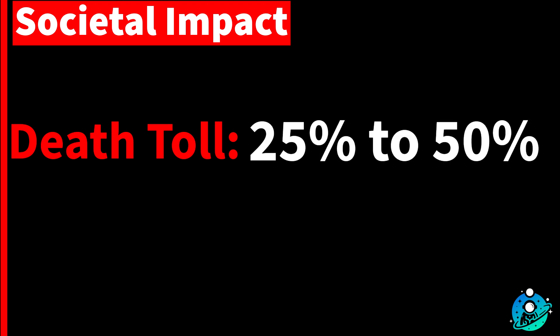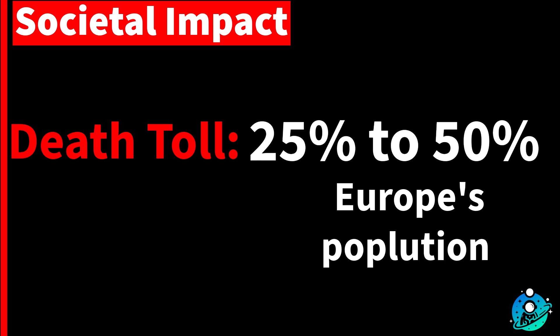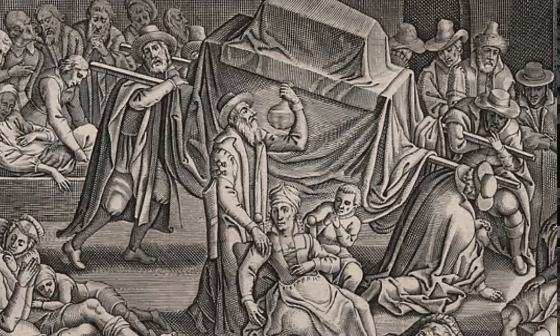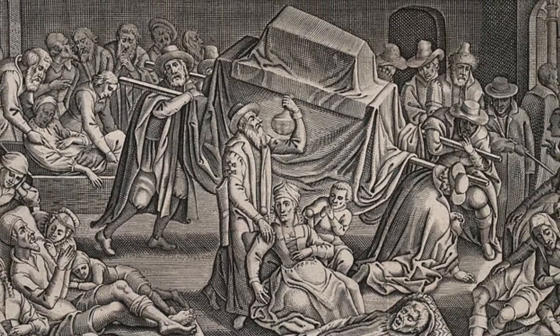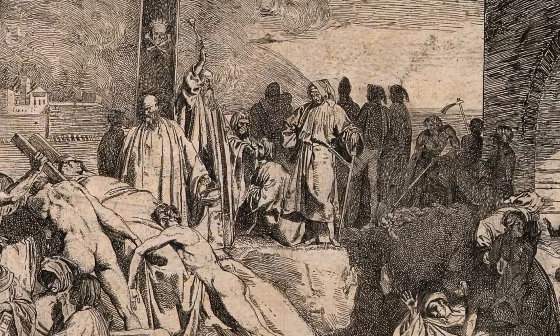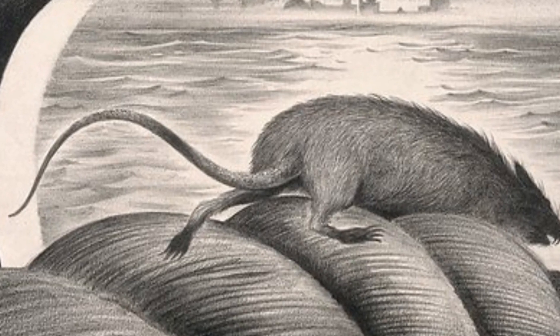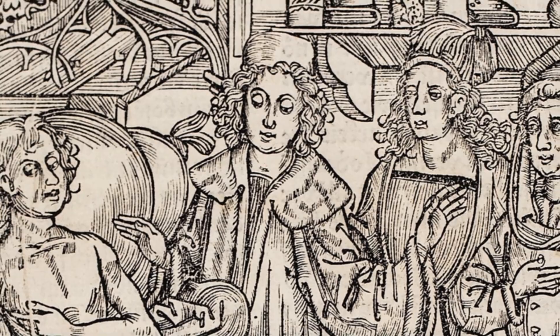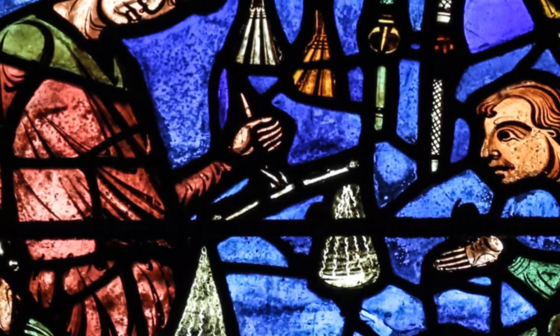The death toll was staggering. It is estimated that the Black Death killed between 25% and 50% of Europe's population, with some areas experiencing even higher mortality rates. The societal impact was profound. Entire communities were wiped out, and the sheer scale of death caused widespread panic and chaos. Traditional social structures crumbled, labour shortages ensued, and the economic system was severely disrupted. The plague also sparked a wave of piety and superstition as people sought explanations for the catastrophe.